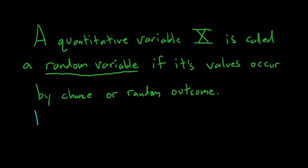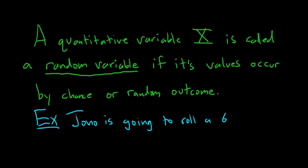Let's do a simple example. Let's say Jono is going to roll a six-sided die. We're going to decide to let capital X be equal to the number on the die.